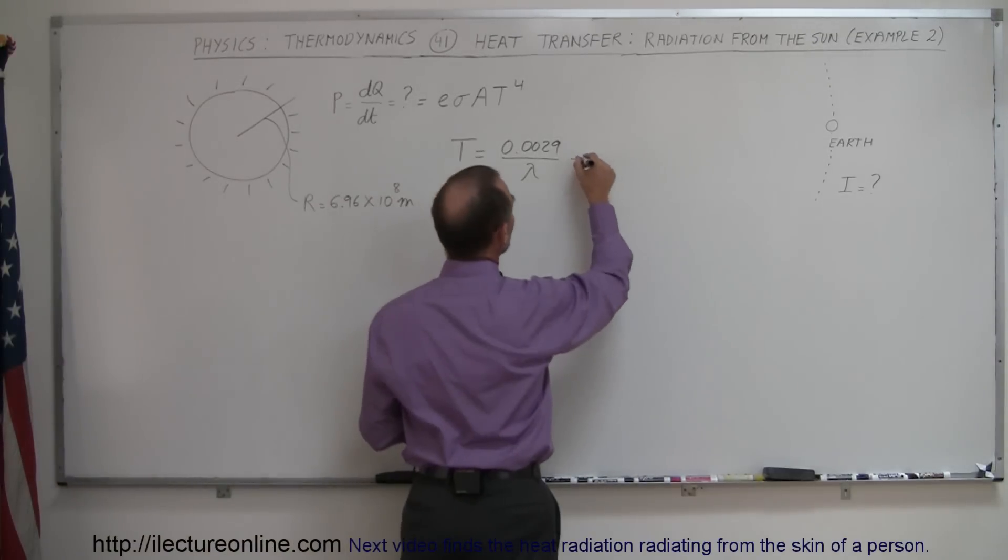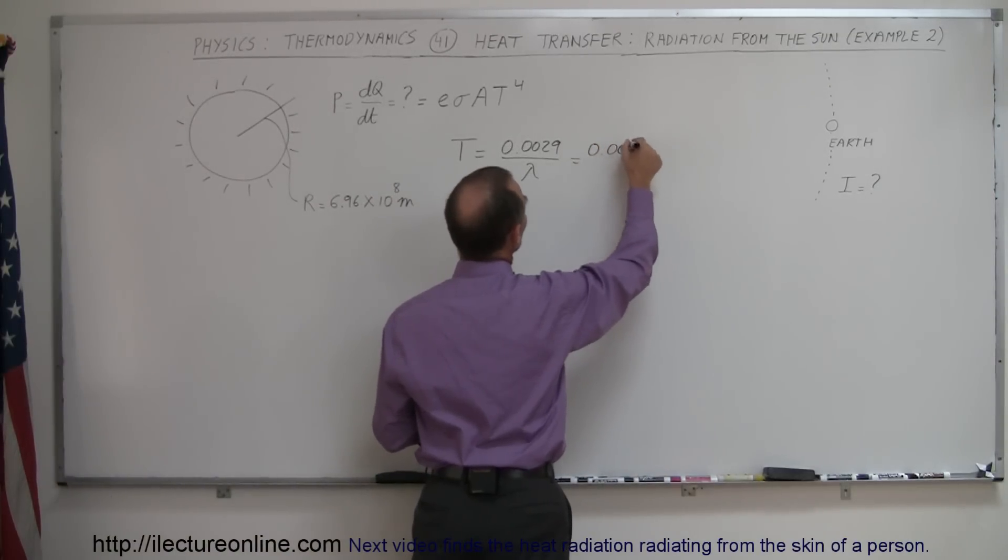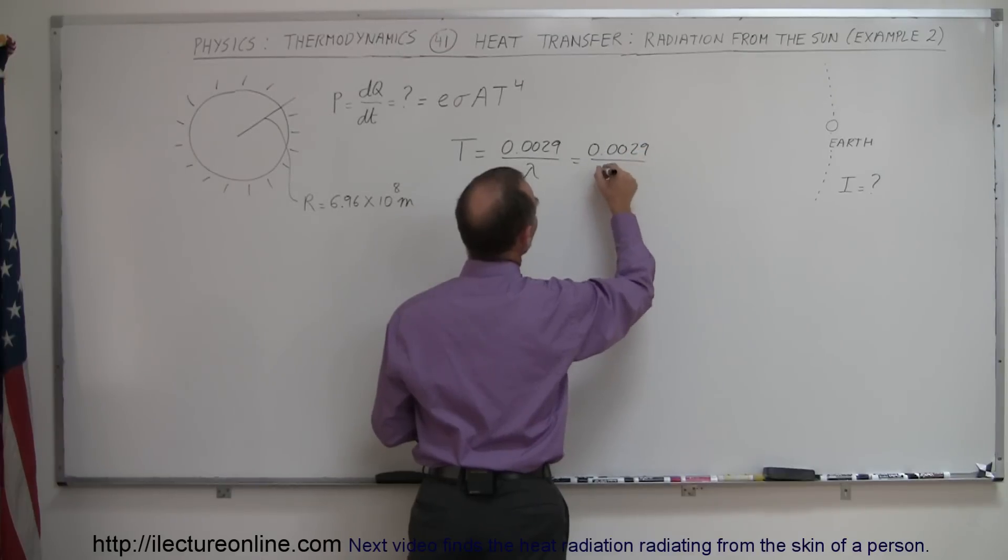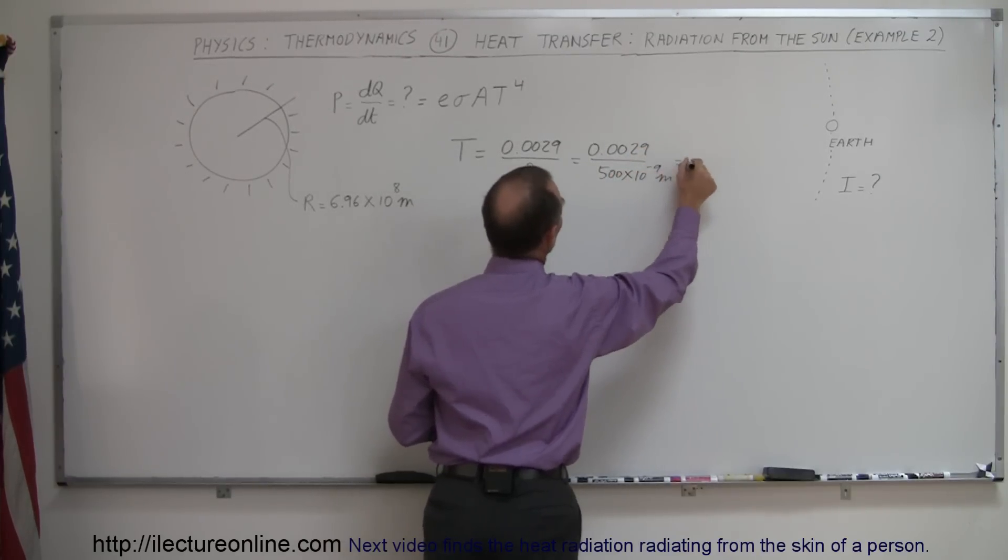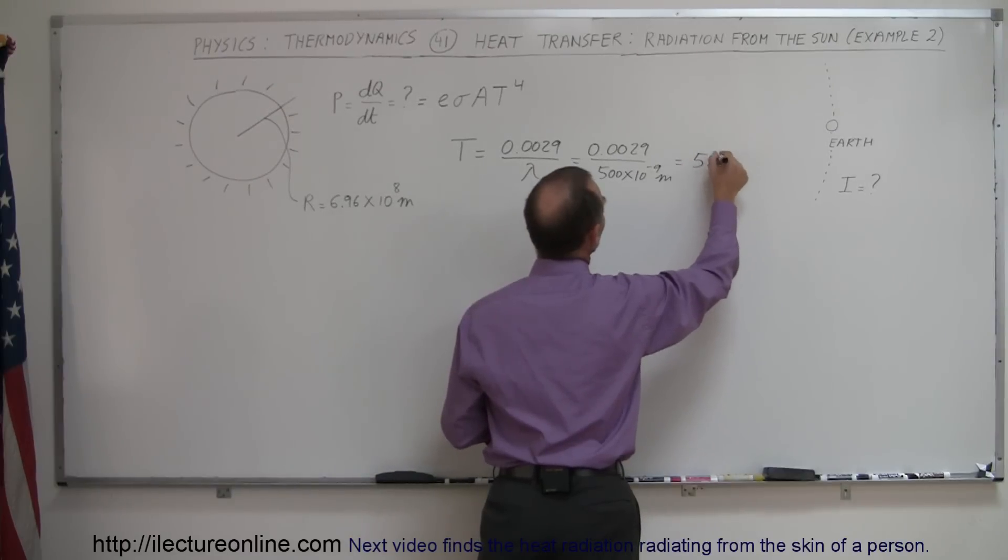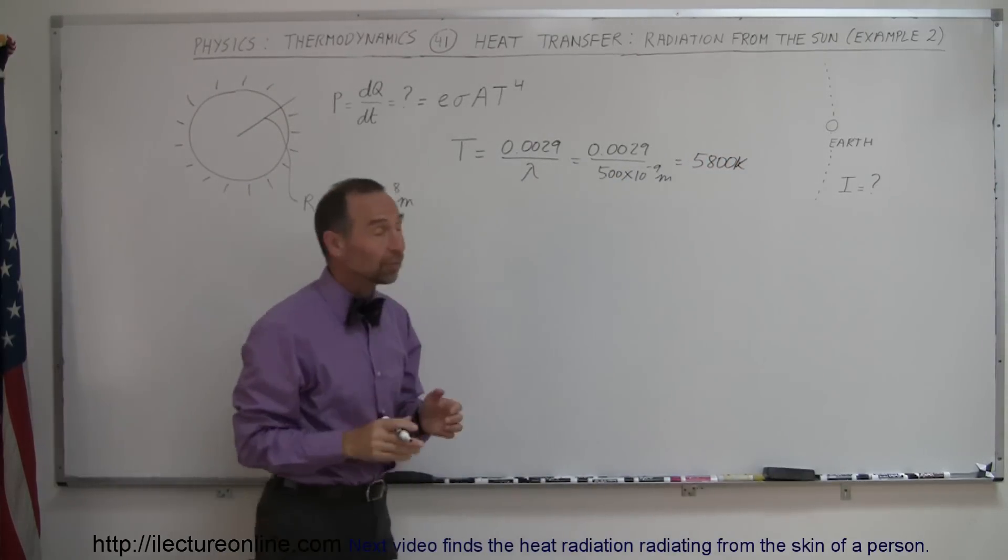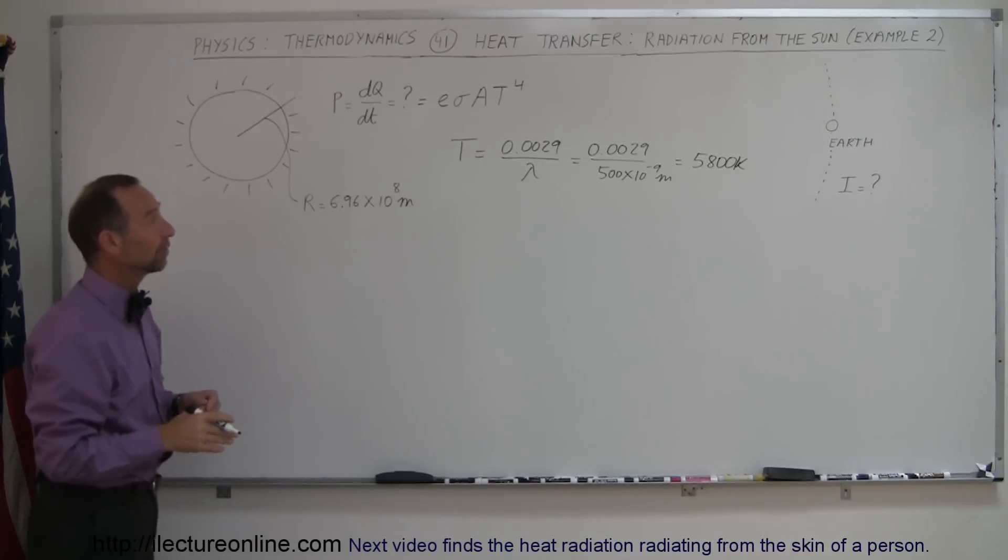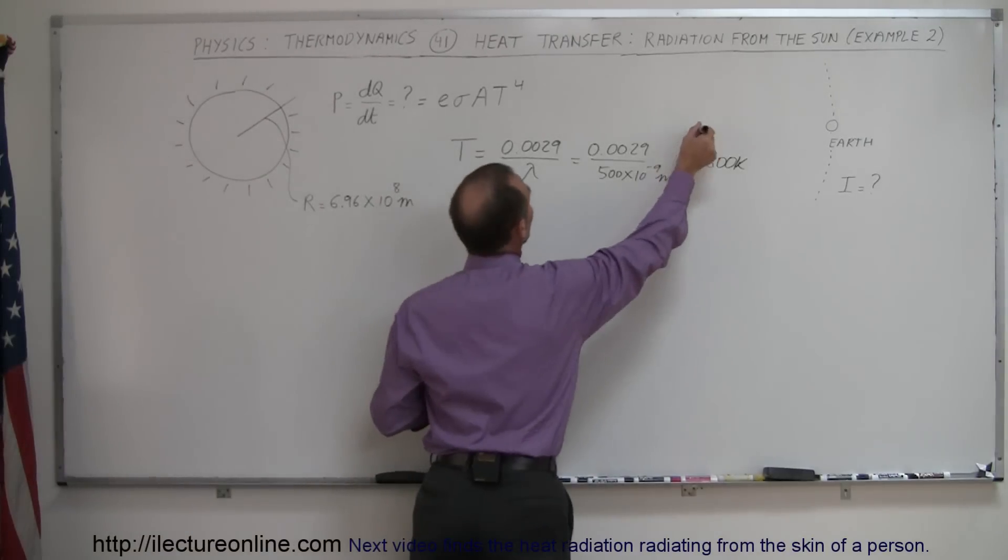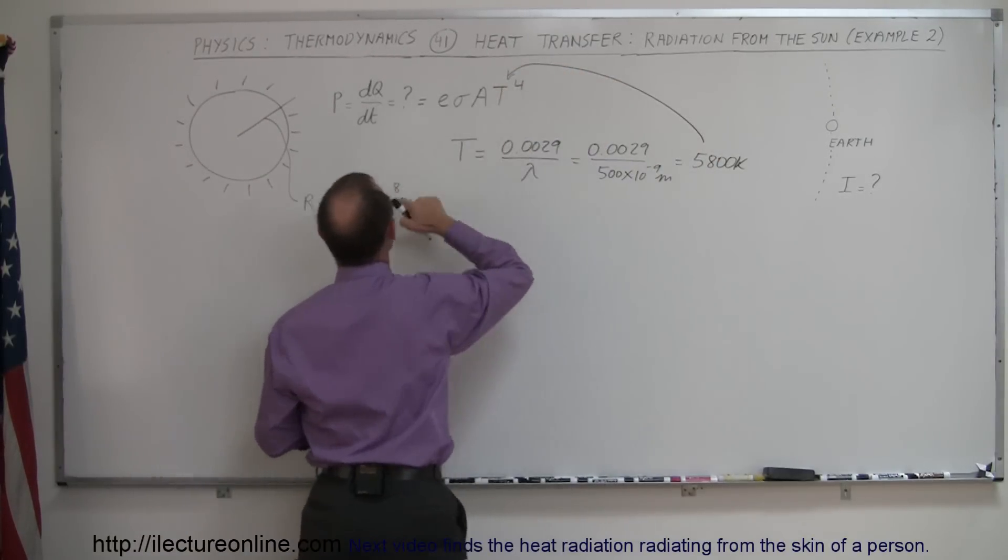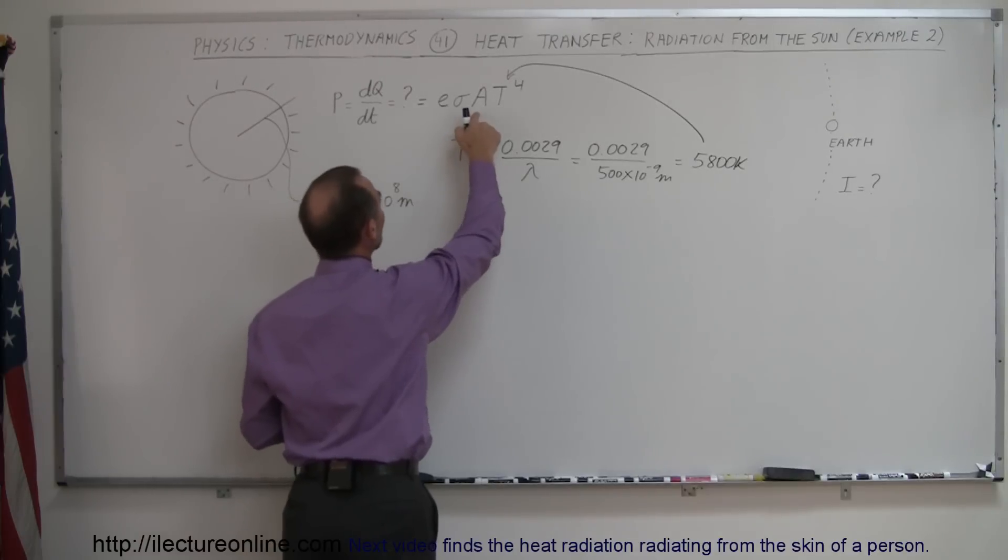So, this would be equal to 0.0029 divided by 500 times 10 to the minus 9 meters, and that would then be equal to 5,800 Kelvin, which means that the surface temperature of the sun is 5,800 Kelvin. We then plug that number in here, and now we use the radius of the sun to find the surface area.